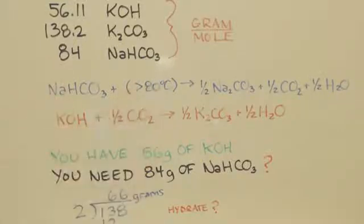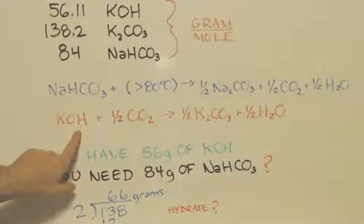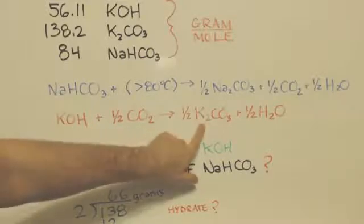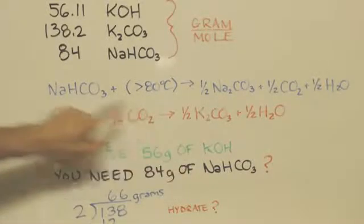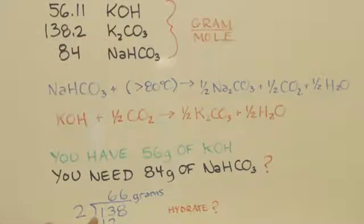But for the reaction itself that's what you need. So how much you're going to make? 66 grams, because as you can see one mole, which is what we have, will make a half a mole of the potassium carbonate, which is 138 grams. We divide that by two though because we're only making a half a mole - that's 66 grams.